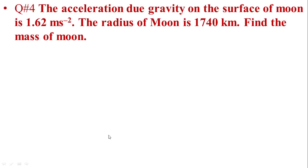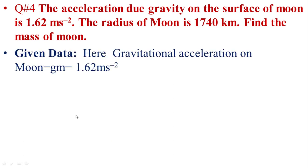Now the last numerical of today's lesson. The radius of the Moon is 1,740 kilometers, and the value of g is 1.62 meter per second squared. We calculate the mass of the Moon when the acceleration due to gravity g is given as 1.62. Writing the given data: gravitational acceleration gm on the Moon, denoted by small g, small gm is equal to 1.62 meter per second squared.